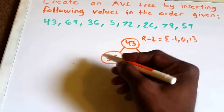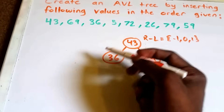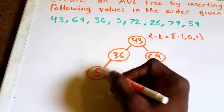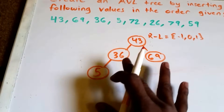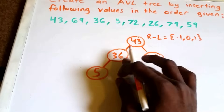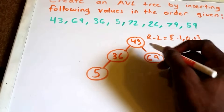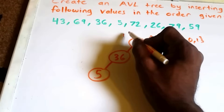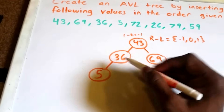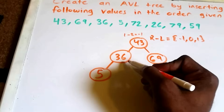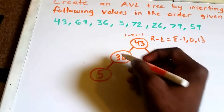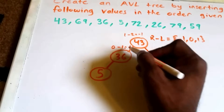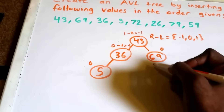Next we're going to insert the value 5. Since 43 is greater than 5, we go to the left and insert 5. The balance factor for 43 is the right side (1 node) minus the left side (2 nodes), giving us 1 minus 2, which equals -1 — still balanced. For node 36, right minus left is 0 minus 1, giving -1 — still balanced. And we get 0 for both node 5 and node 69.